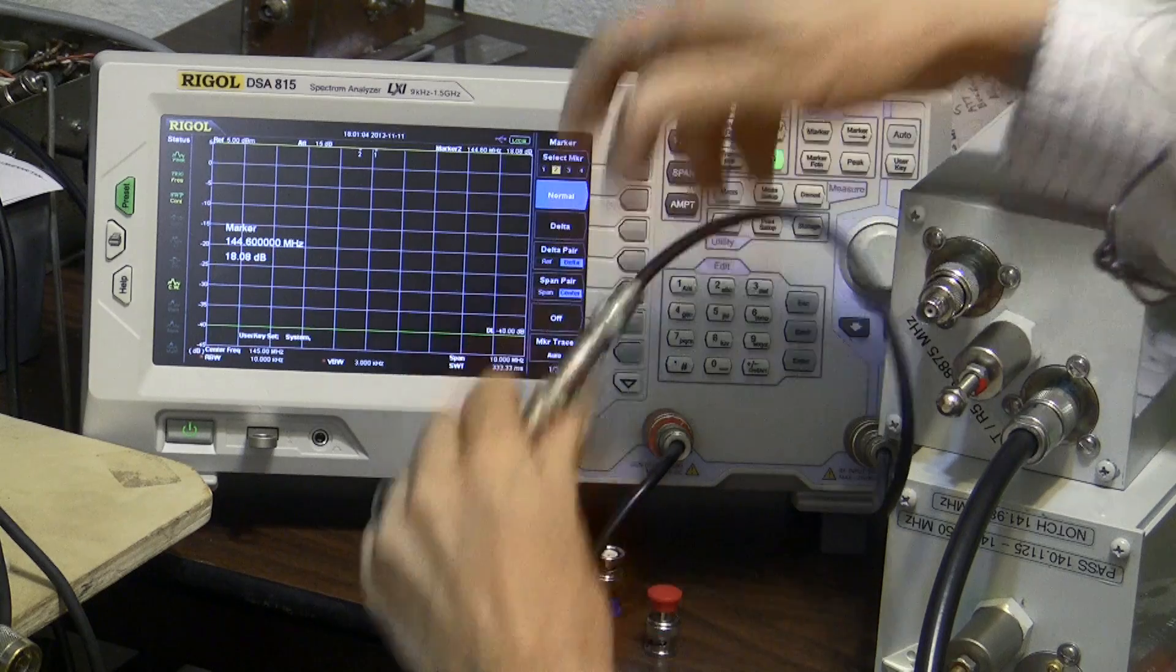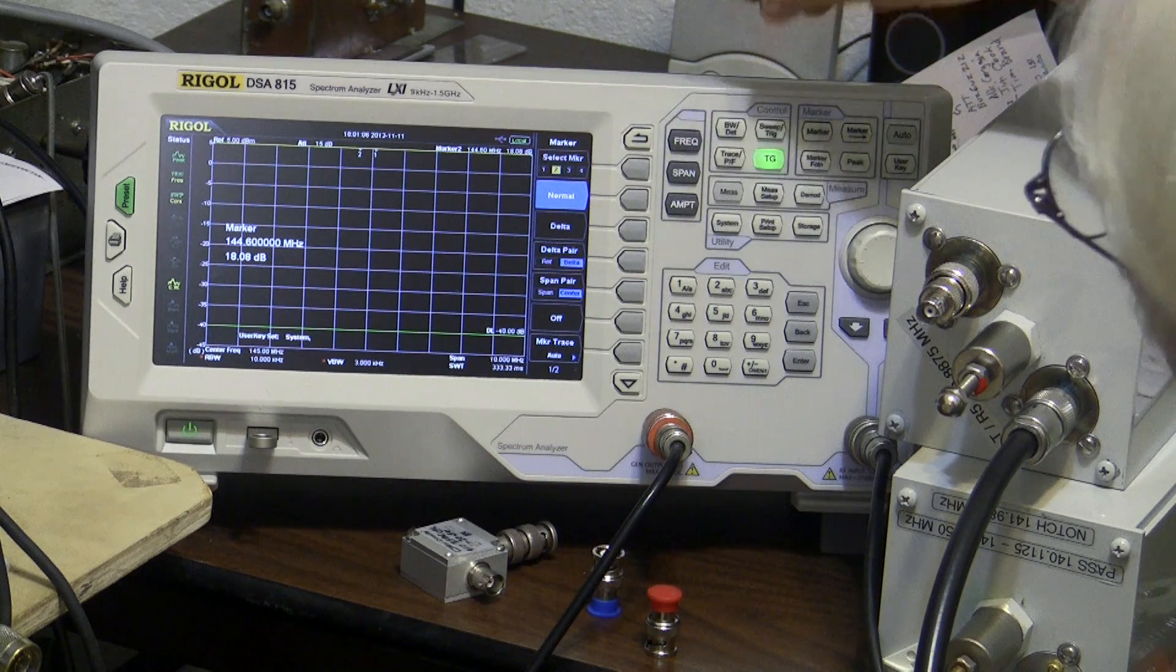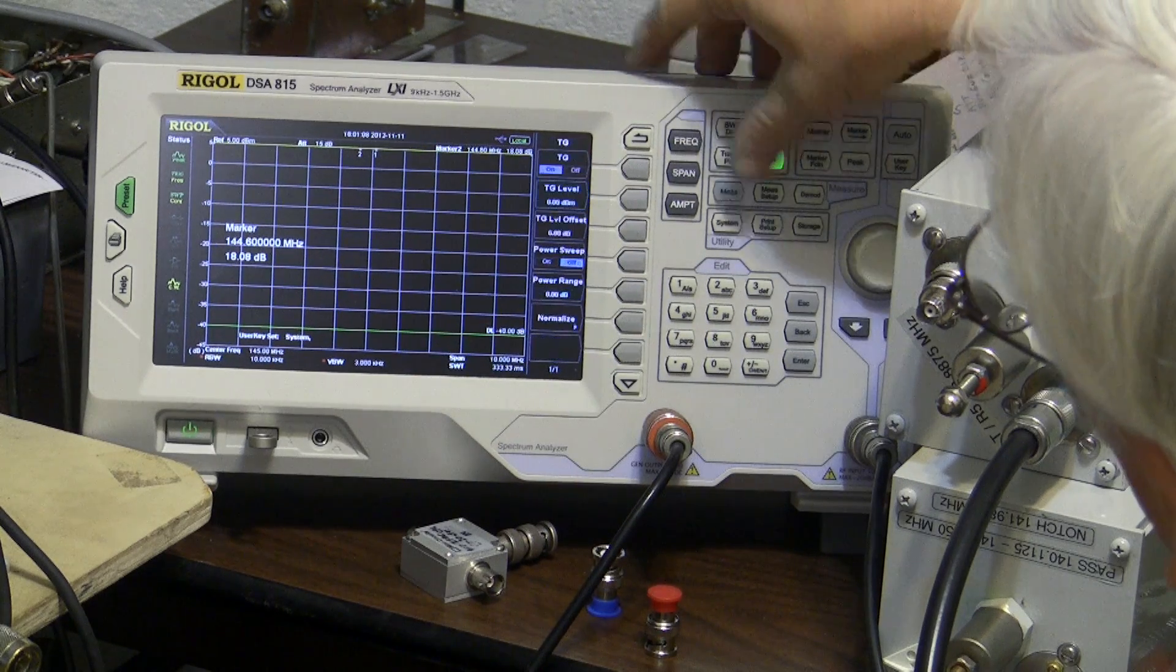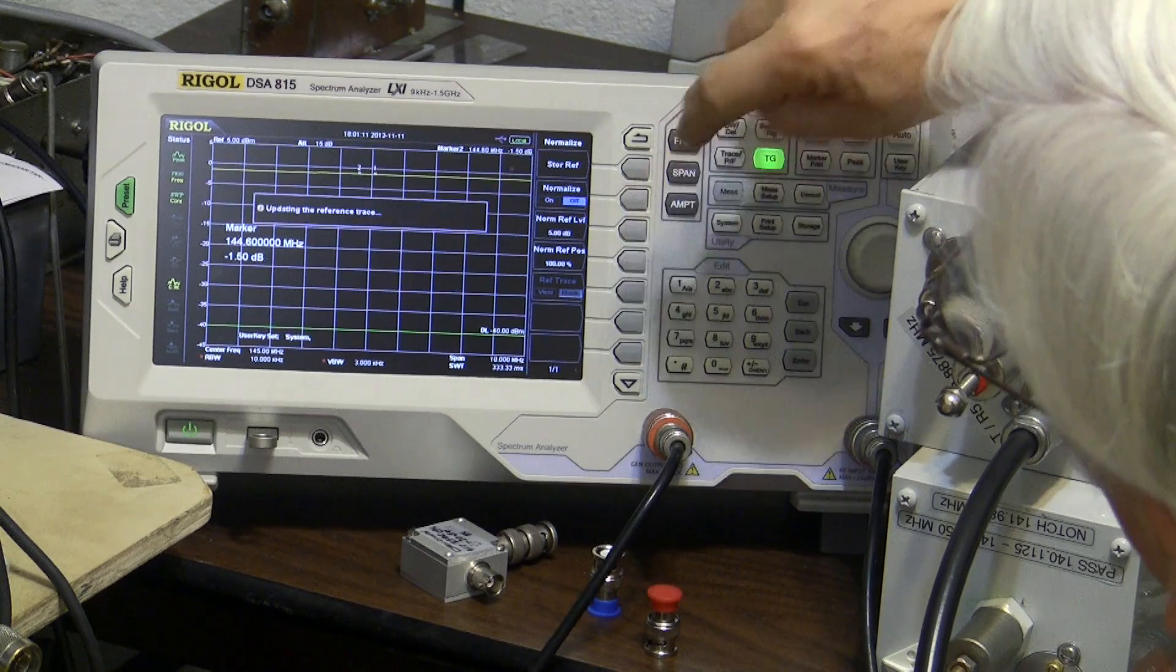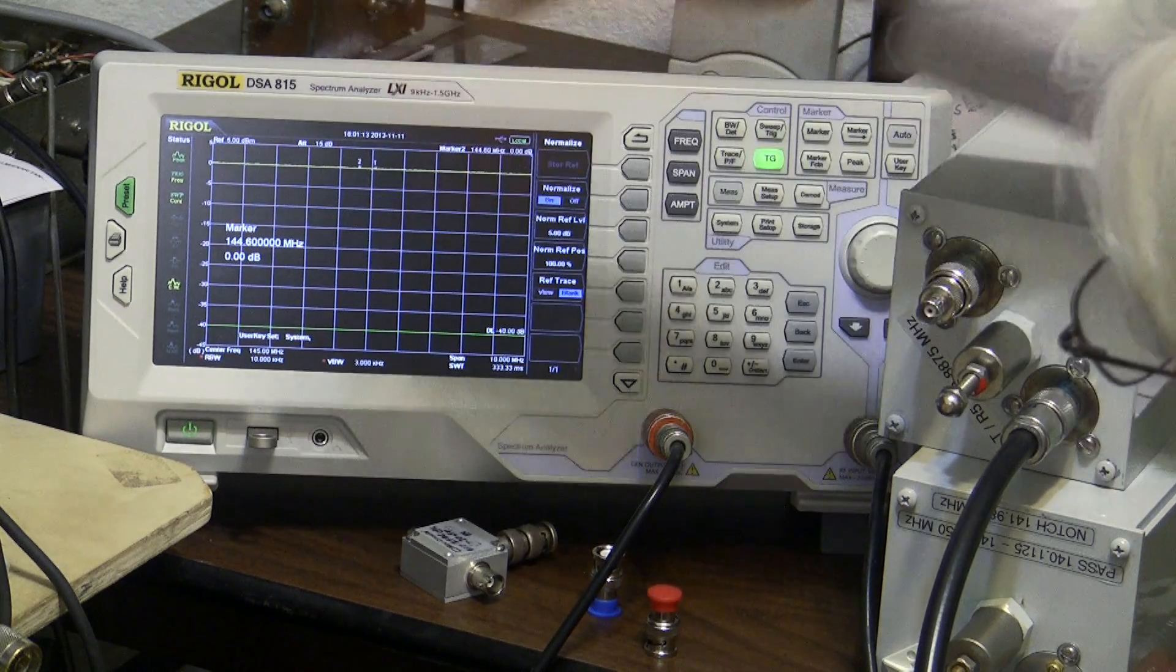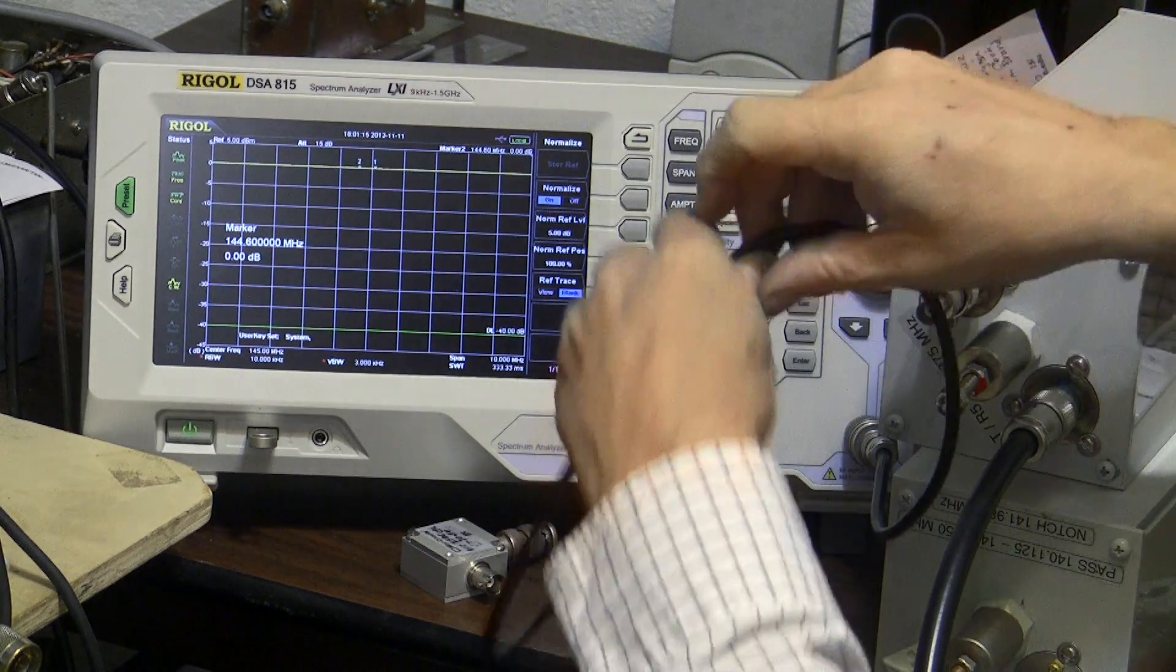So we'll put the bullet in here and tracking generator, normalize, normalize off, normalize back on. There we are back at our zero reference.